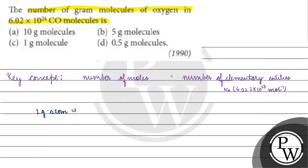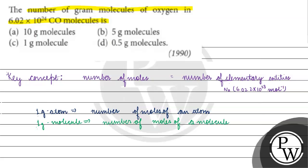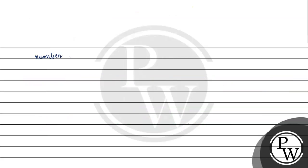If we talk about 1 gram atom, it is basically the number of moles of an atom. And if we talk about 1 gram molecule, it is basically equal to the number of moles of a molecule. For example, for an oxygen atom, 1 gram atom equals 1 gram molecule.